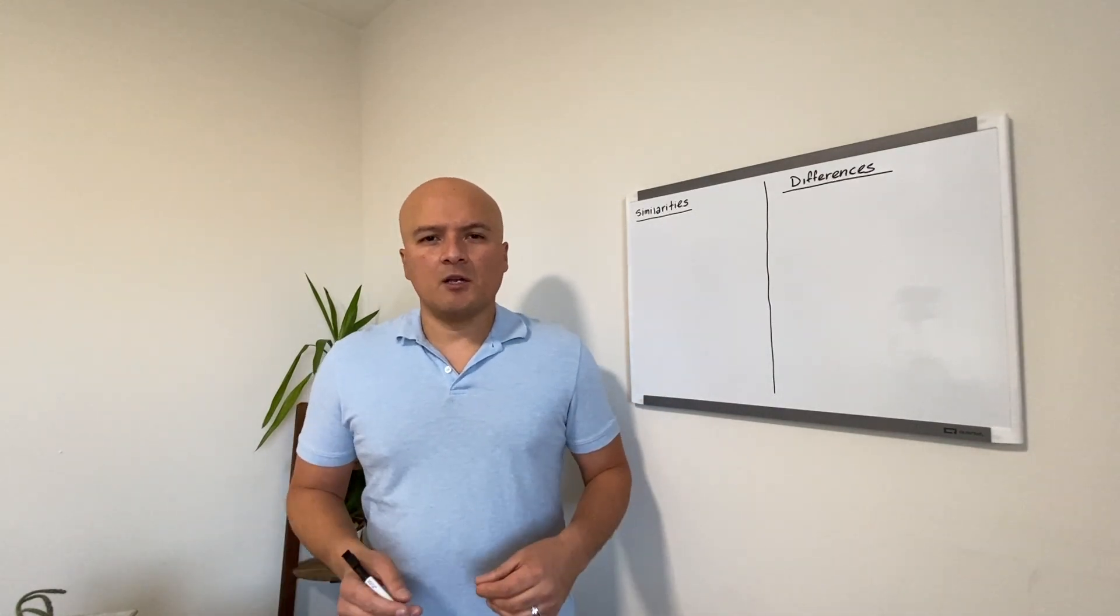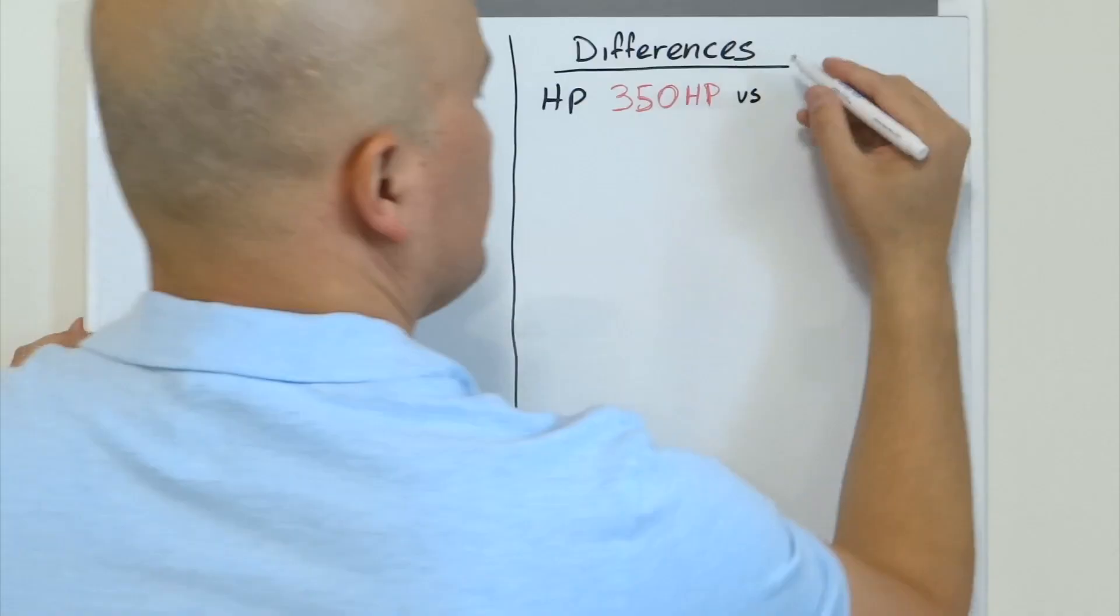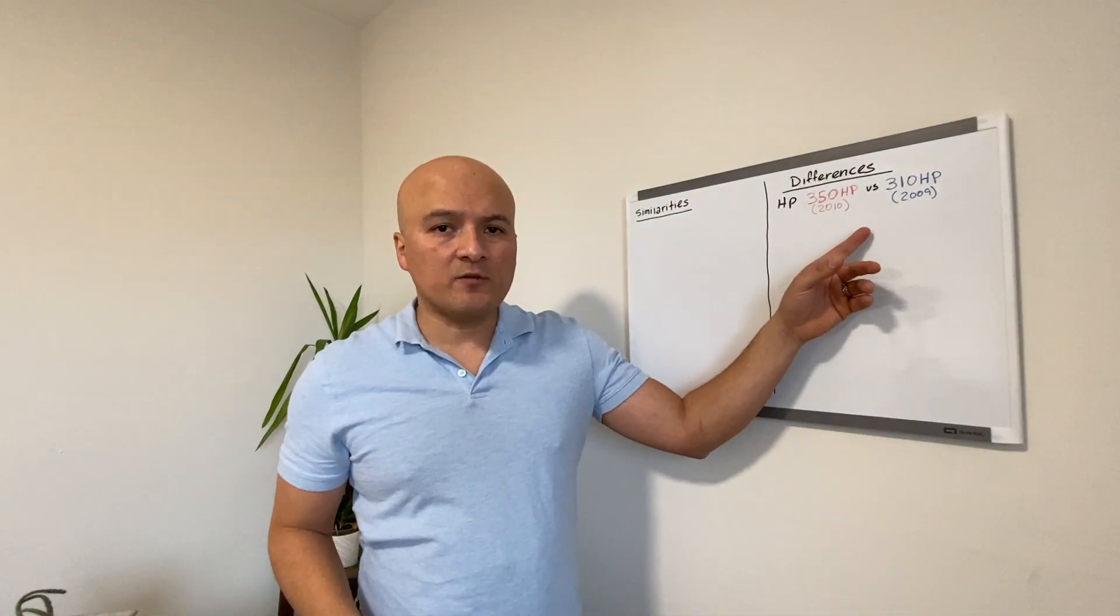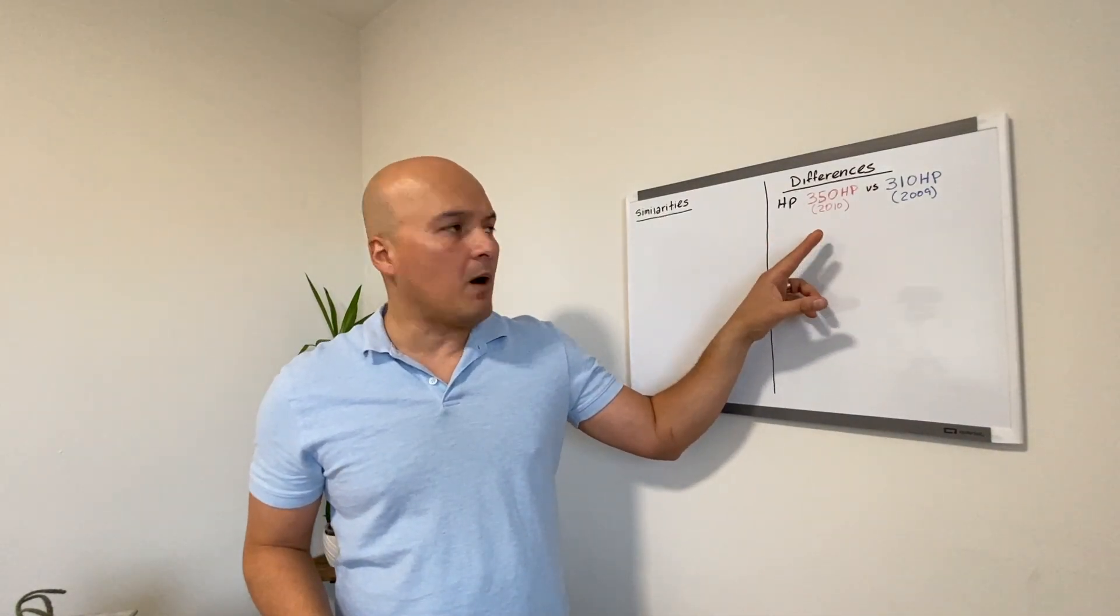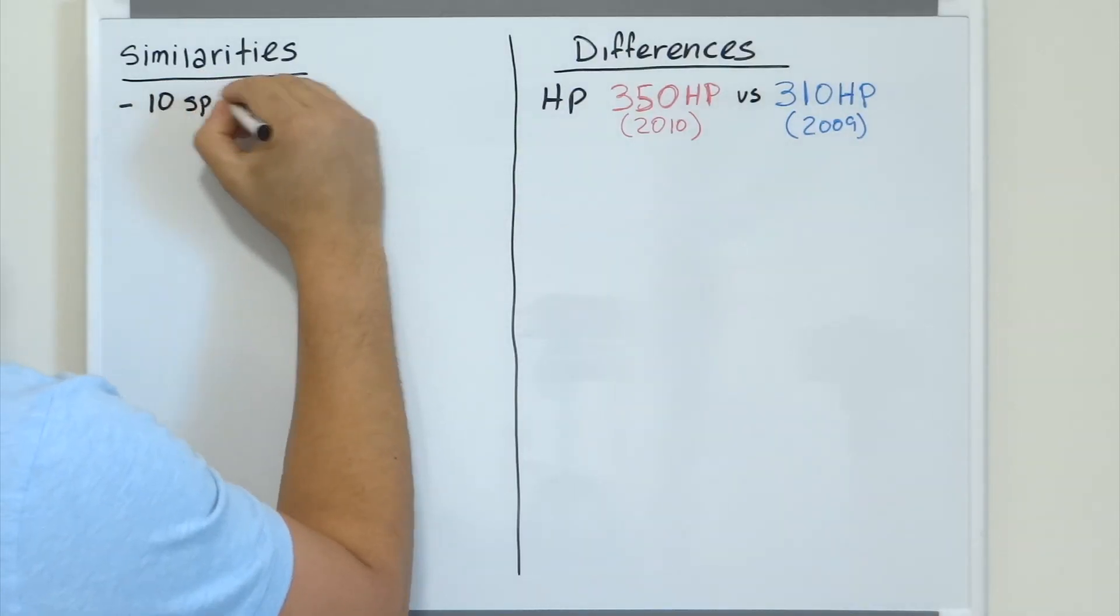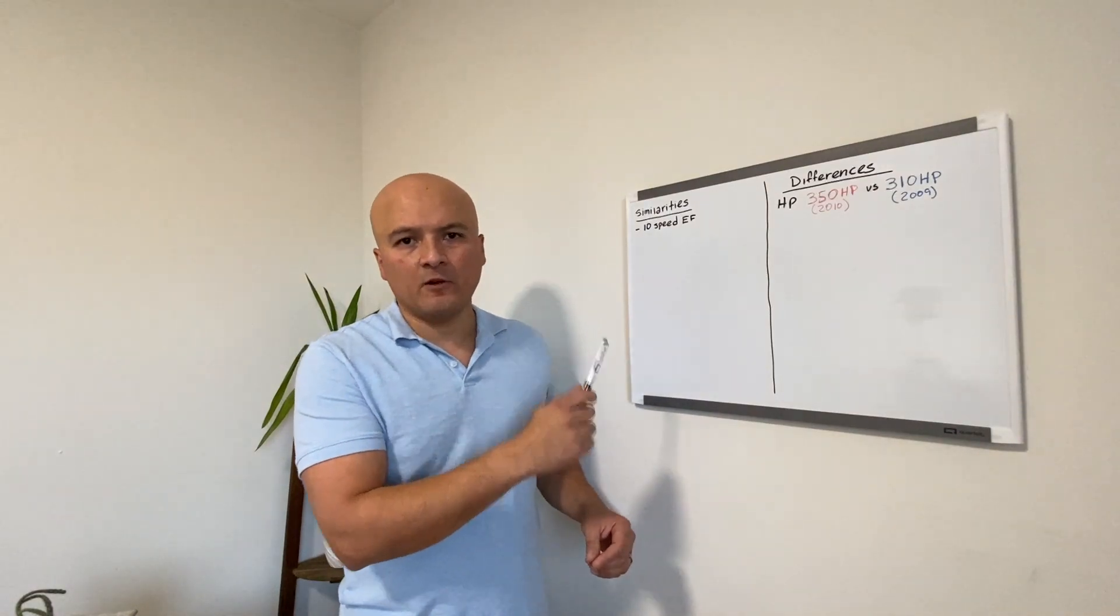For starters, the trucks are different in horsepower. The Cummins engine is a 350 horsepower and the MaxForce engine is a 310 horsepower. There's only one year model that separates these two engines. Both trucks had the same transmission and it was the 10-speed Eaton Fuller transmission.